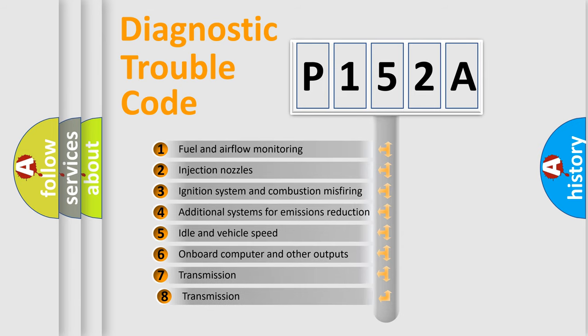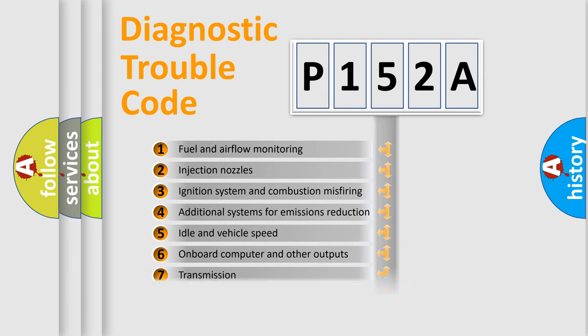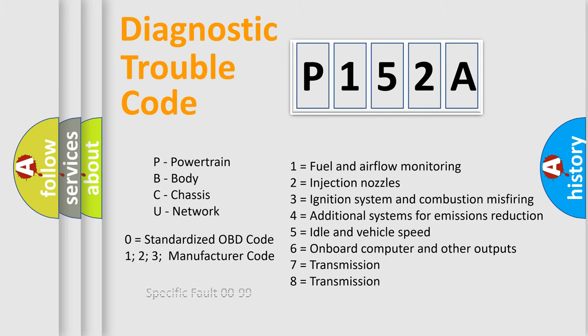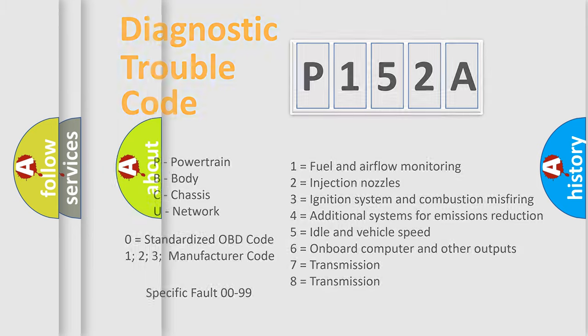The third character specifies a subset of errors. The distribution shown is valid only for the standardized DTC code. Only the last two characters define the specific fault of the group. Let's not forget that such a division is valid only if the other character code is expressed by the number zero.